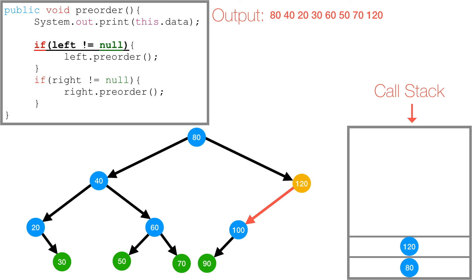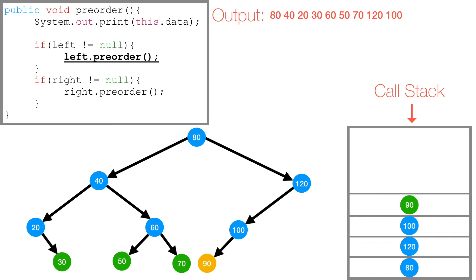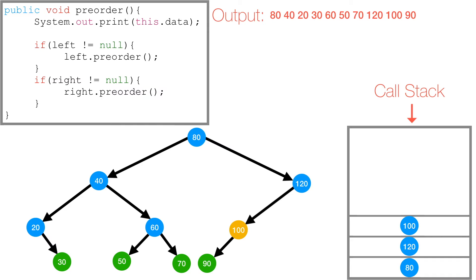Then we check if 120's left is not null — it's not — so 100 gets pushed to the call stack. We print 100. Then we check if 100's left is not null — it's not — so we call preorder on 100's left subtree. 90 gets pushed to the call stack, and we print 90. Then we check if 90's left is null — it is — and 90's right is also null, so 90 gets popped off the call stack. We're back at 100, and we've explored 100's left subtree containing 90.